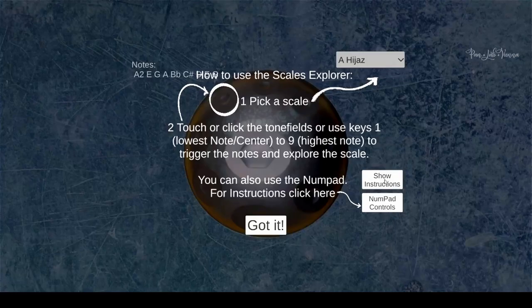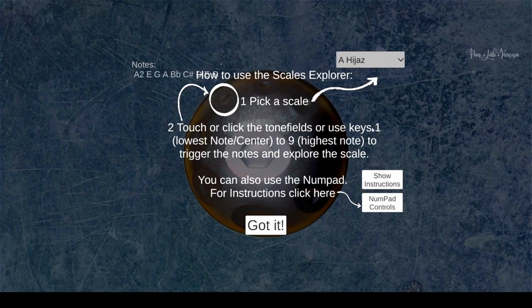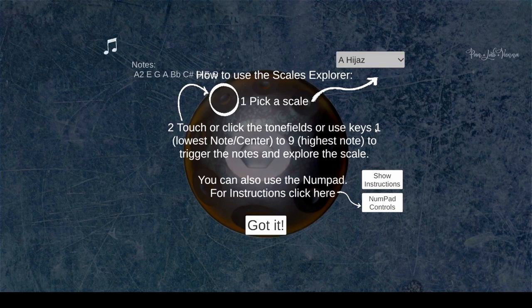And as you can see in the instructions panel, you can also trigger the sounds using the number keys on your keyboard. So when I hit the one, center note will play and then ascending, two, three, four, all the way up to nine, will give you the whole scale.